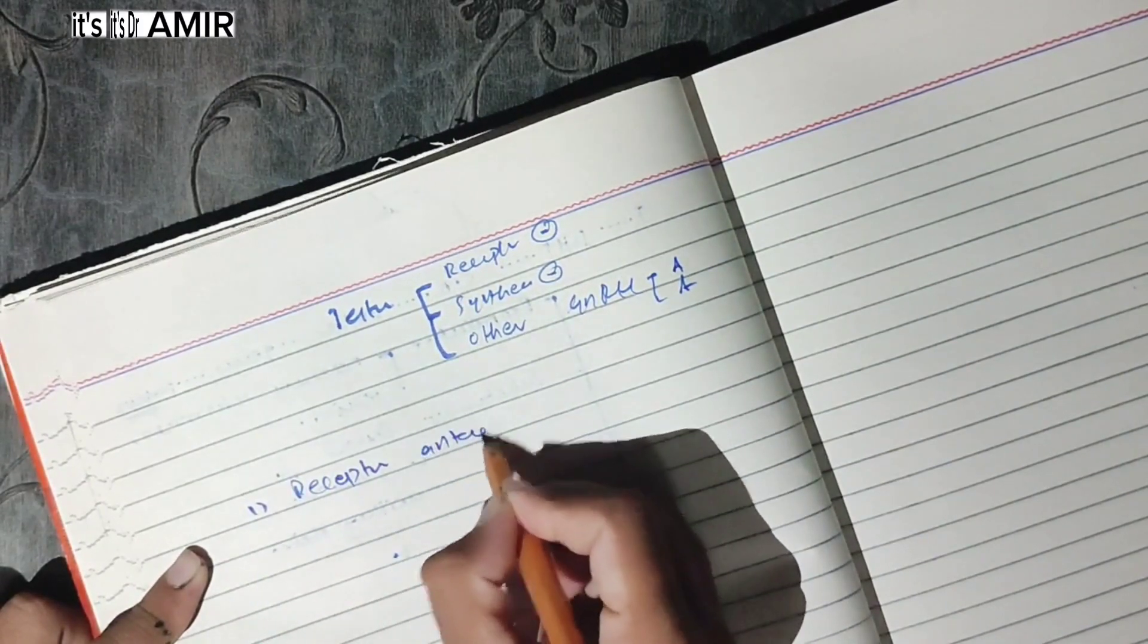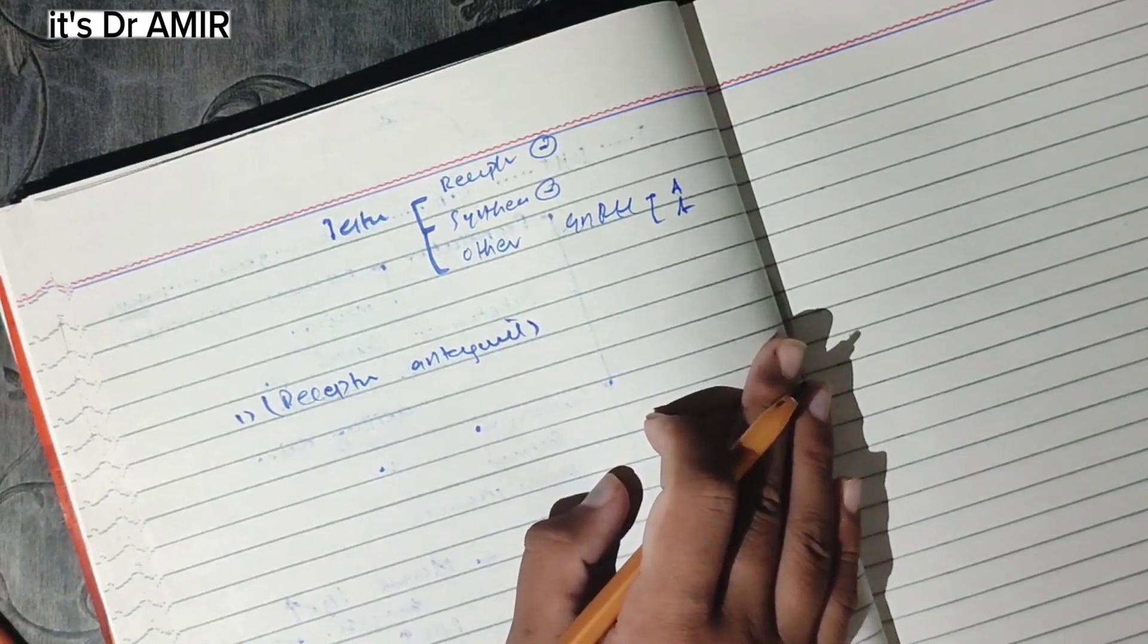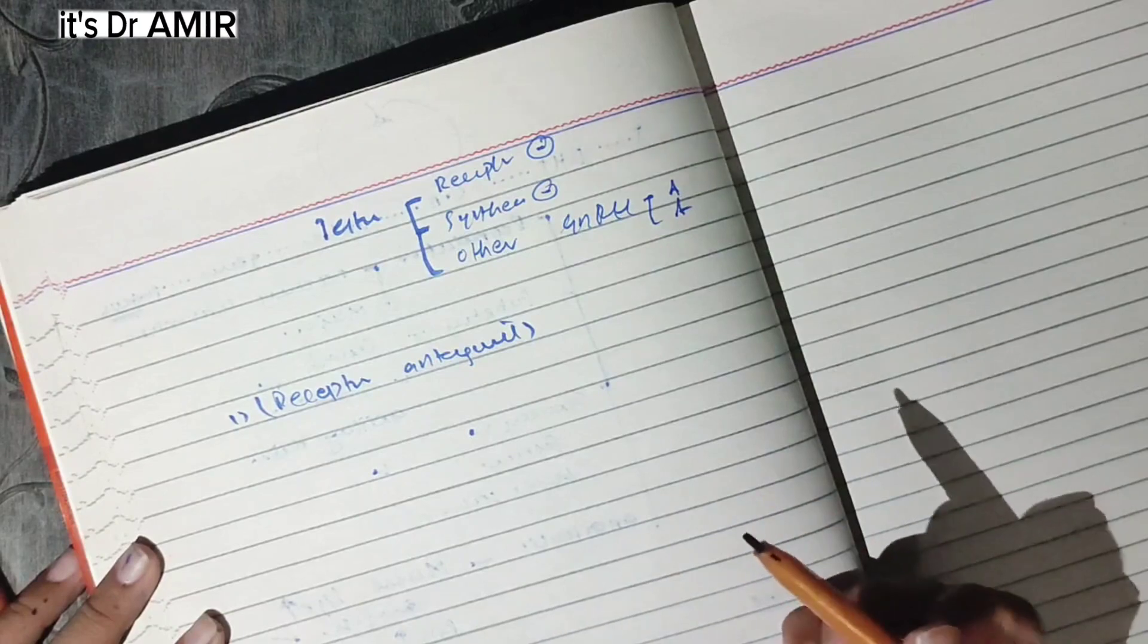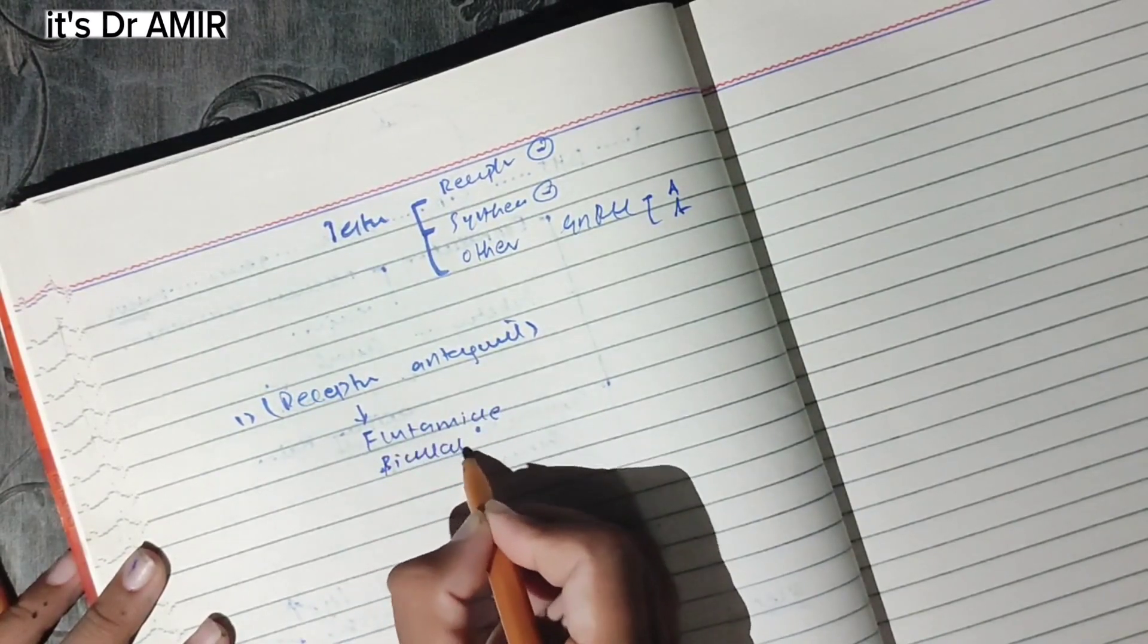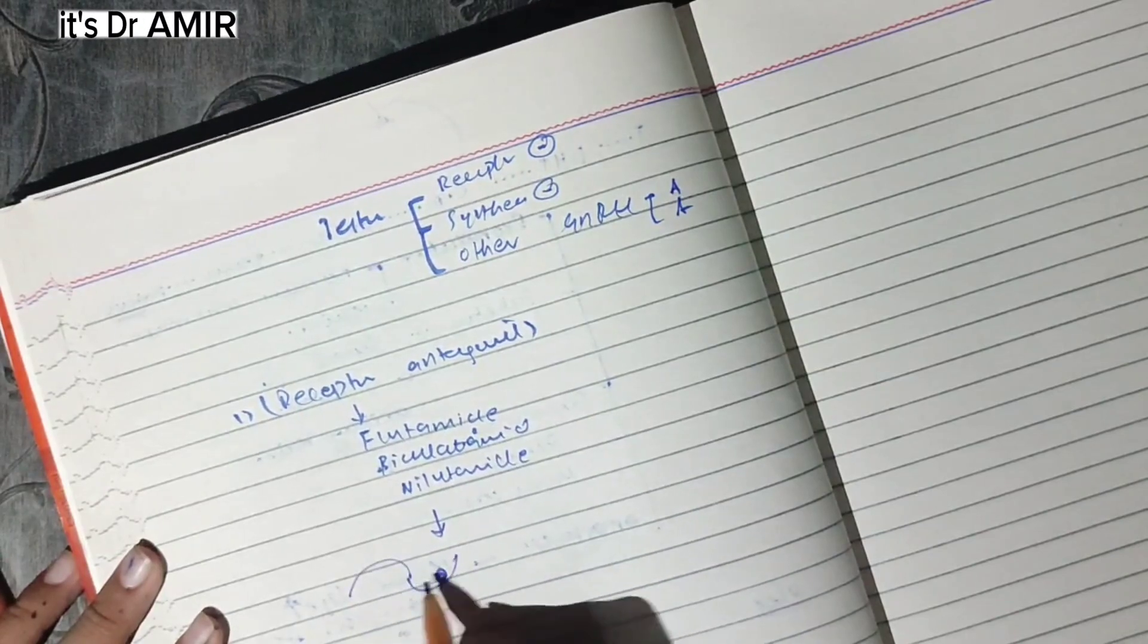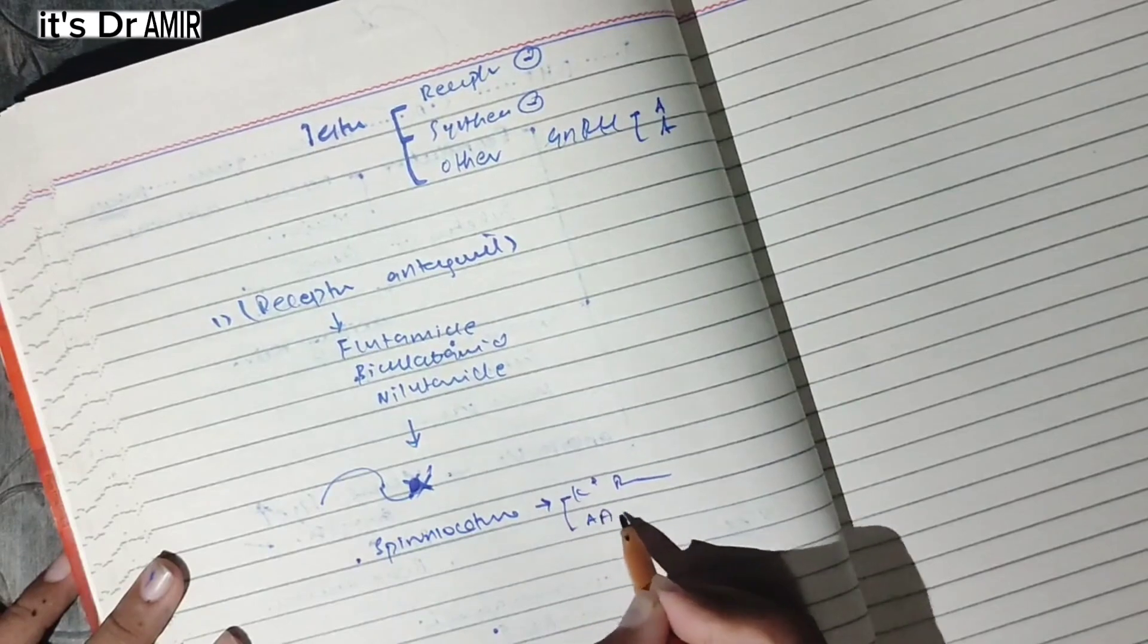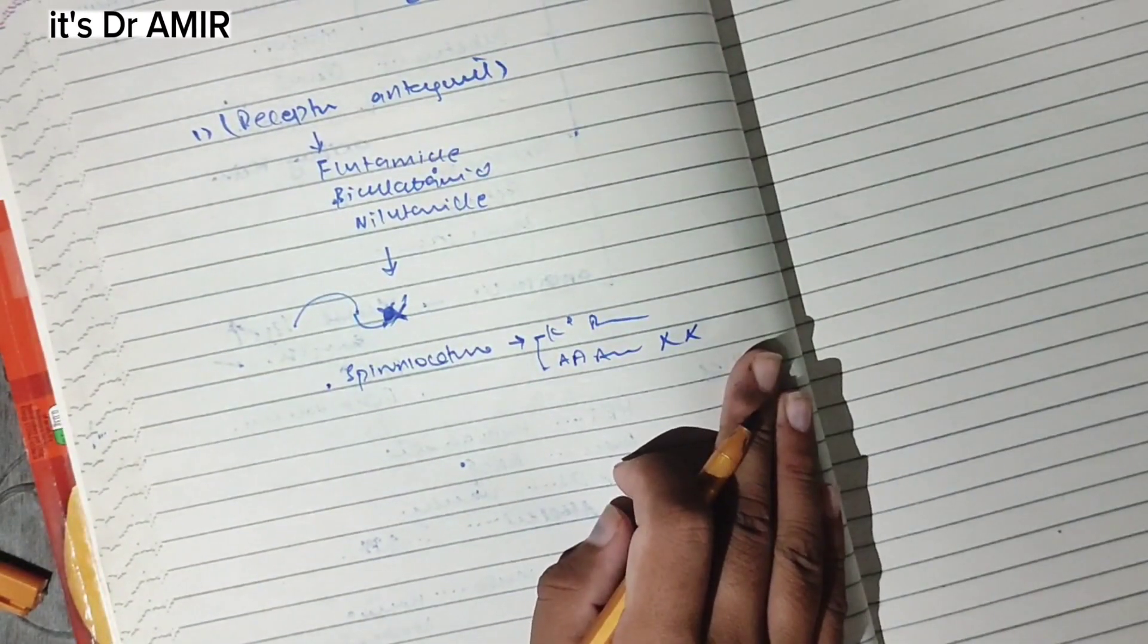First, let's talk about receptor antagonists. We can use flutamide or related compounds like bicalutamide, nilutamide, and enzalutamide. These are non-steroidal competitive antagonists of androgen receptors. We can use flutamide and related compounds like bicalutamide and nilutamide in prostate carcinoma. We can also use spironolactone as a receptor antagonist.